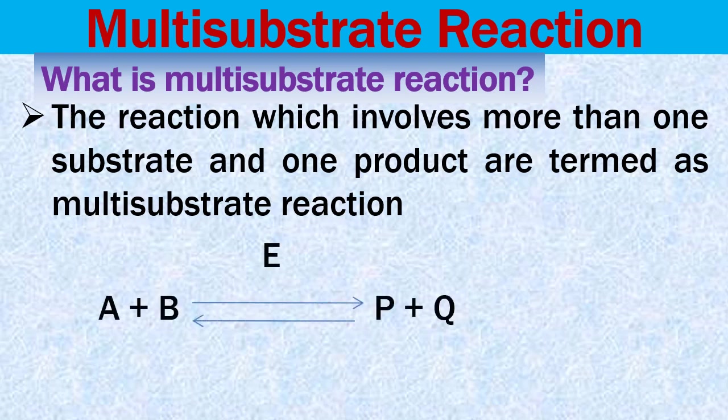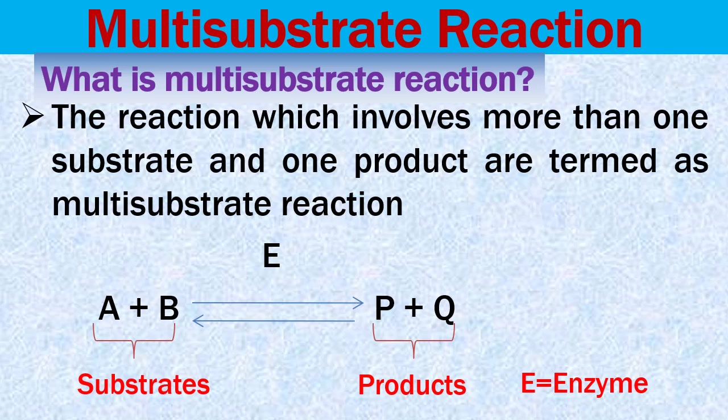Multi-substrate reactions are reactions which involve more than one substrate and more than one product. In the generalized representation, A and B are the two substrates; when they bind to enzyme E, products P and Q are formed. Such reactions where more than one substrate and more than one product are involved are called multi-substrate reactions.